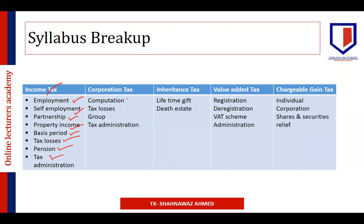To summarize the syllabus by topic: income tax covers employment income, self-employment income, sole trader, partnership, property income, basis periods, tax losses, pensions, and tax administration. Corporation tax covers computation, tax losses, groups, and tax administration. Inheritance tax covers lifetime gifts and tax on death estates. VAT covers registration, de-registration, different VAT schemes, administration, input and output tax, and other VAT issues. Chargeable gains covers CGT for individuals and corporations, disposal of shares and securities, and reliefs available for both.